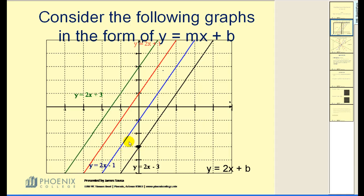The blue line, y equals 2x minus 1, crosses the y-axis at negative 1. The red line, y equals 2x plus 1, crosses the y-axis at positive 1.